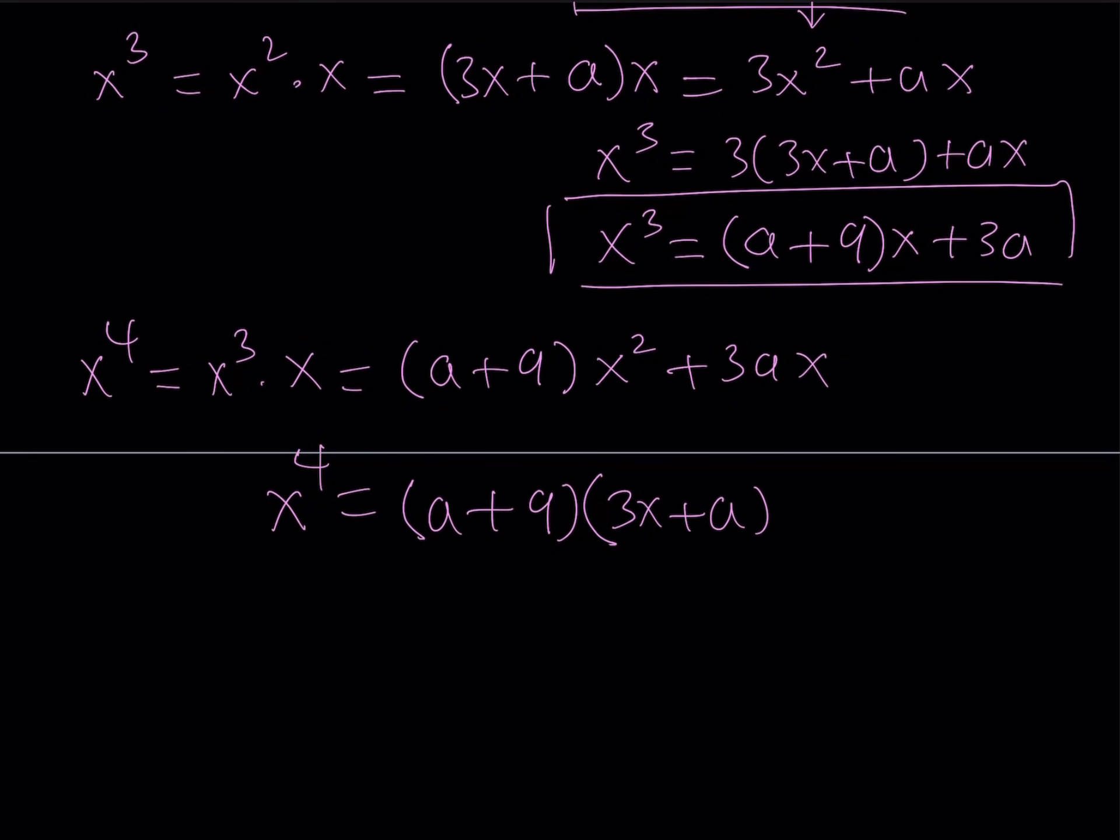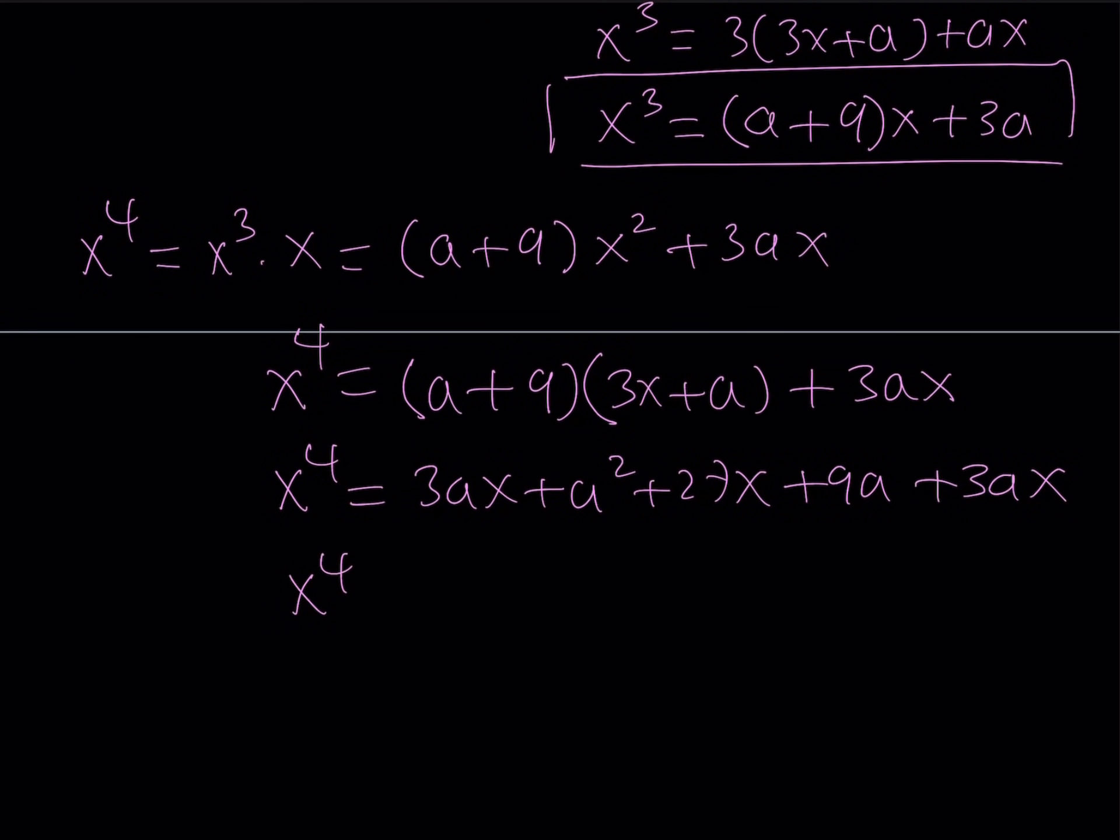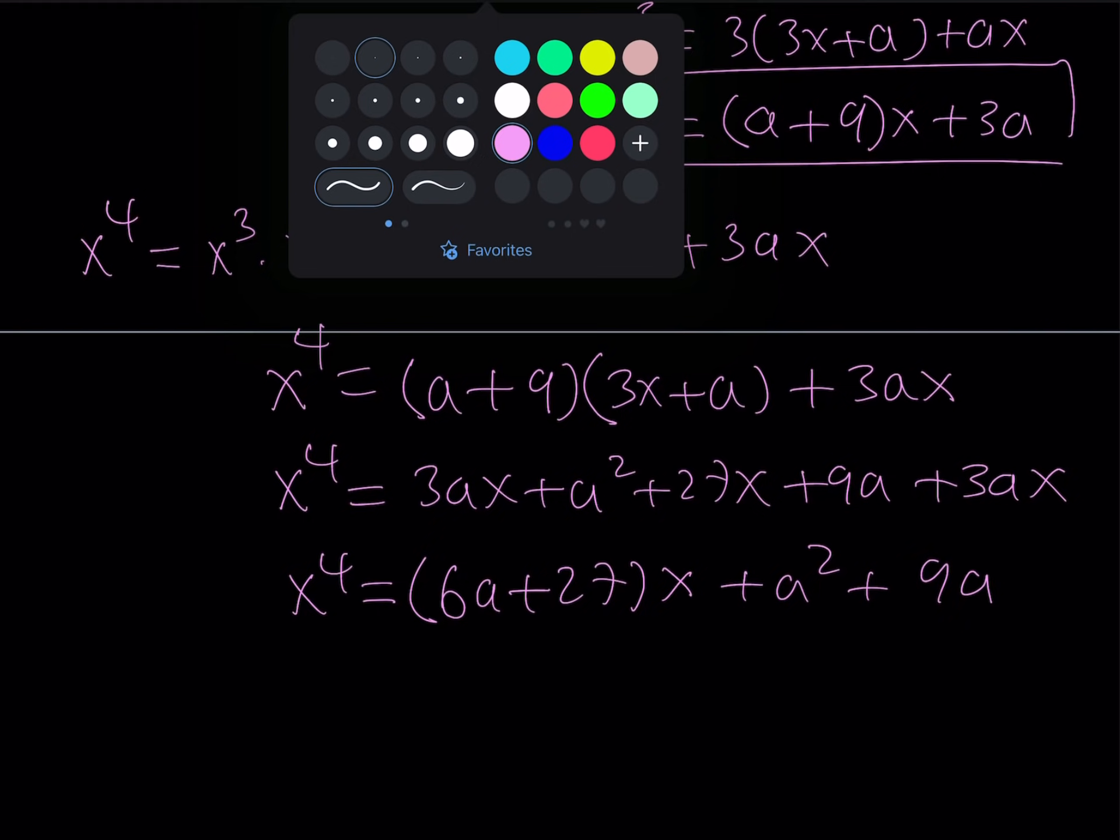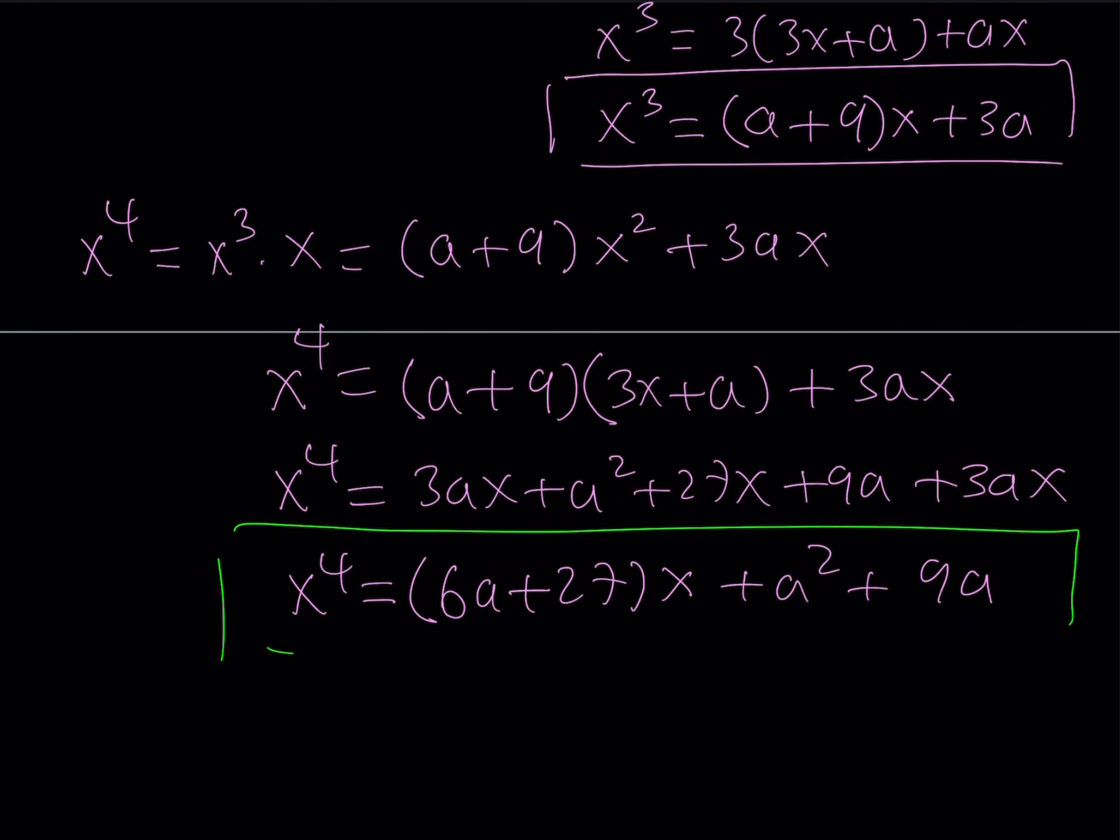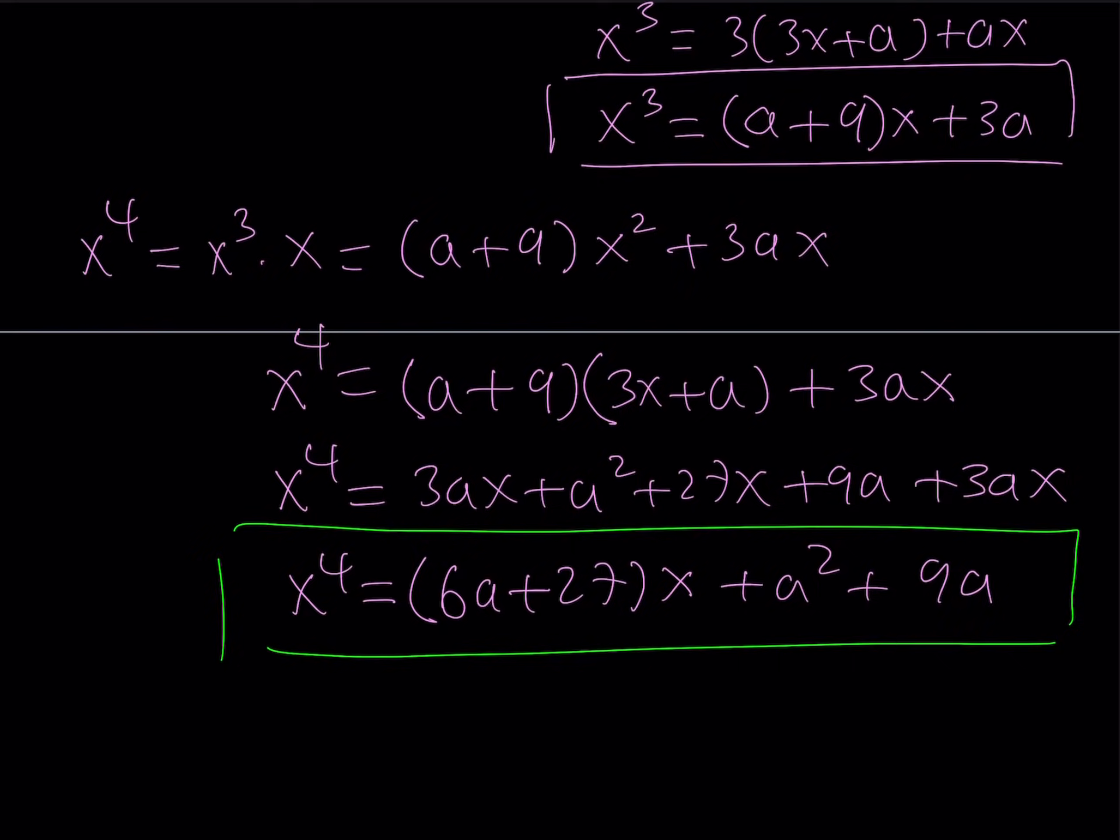Let's go ahead and do it. This is x⁴, remember. And now x² will be replaced with 3x + a. So the whole idea is to make everything linear. Express all the powers of x as a linear because we are able to do that. And now here, if you distribute, you get 3ax + a² + 27x + 9a + 3ax. And if we simplify this, we get the following: 6ax + 27, which is (6a + 27)x + a² + 9a.